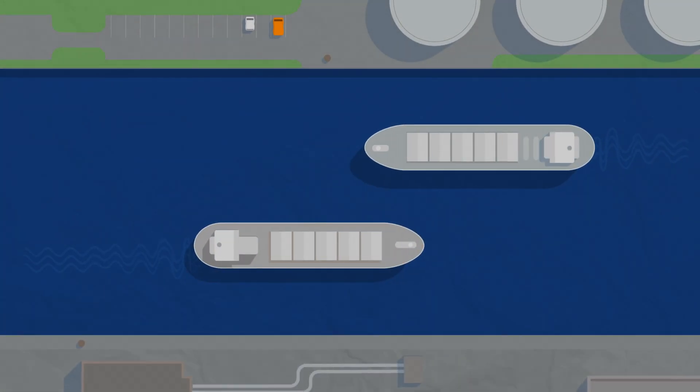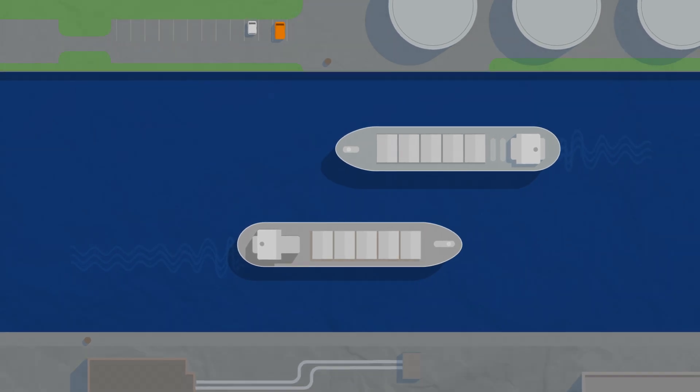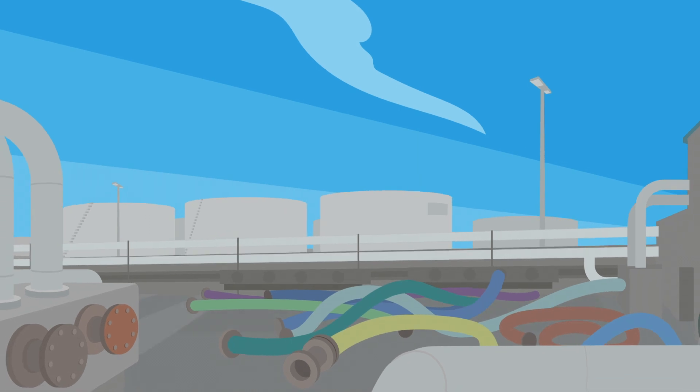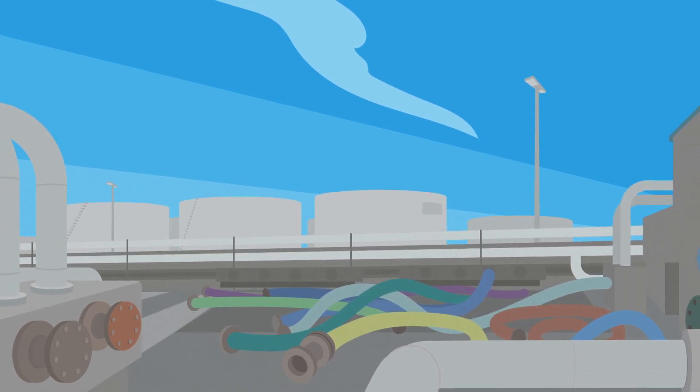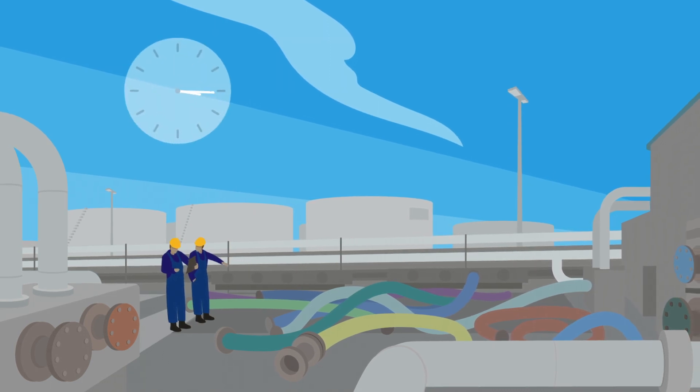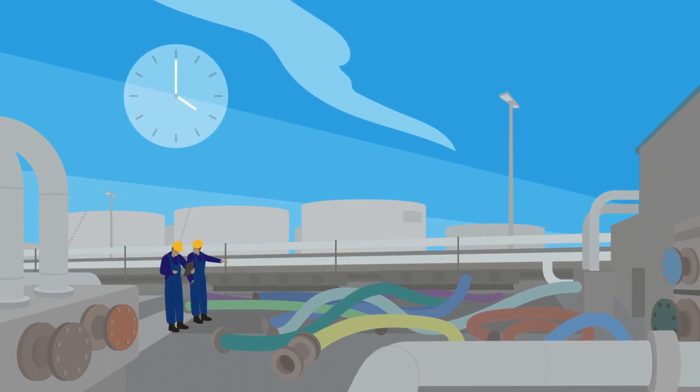At a transfer location there are all kinds of products being moved around and the hoses used for this purpose are difficult to identify and trace. This means that a relatively large amount of people and time are needed to operate correctly and safely.